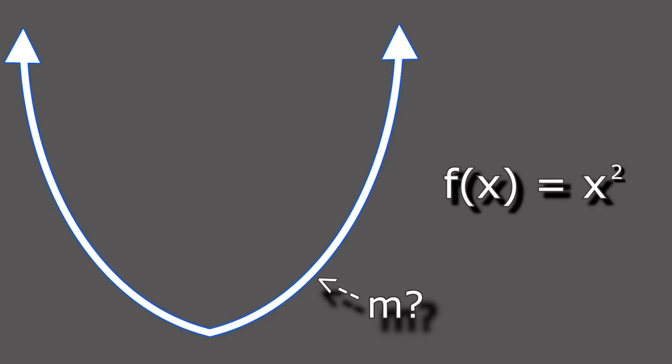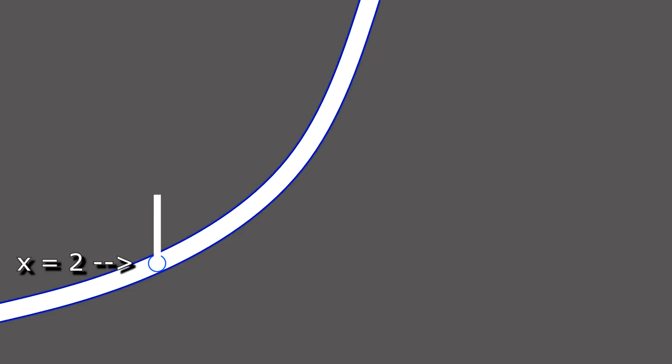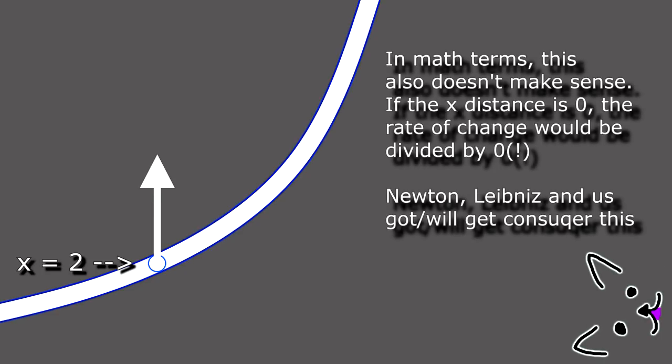This is all cool and stuff, except when you get to crazy functions like x squared. Here's a question. What's the rate of change at x equals 2? Huh? I know, right? Weird question. I'm asking how much the y value changes when the x value doesn't change. That doesn't make sense.